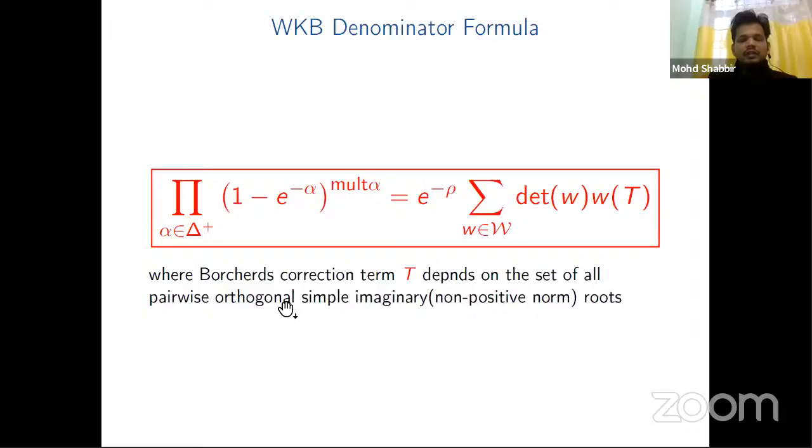So this gives you the famous Jacobi triple product identity.